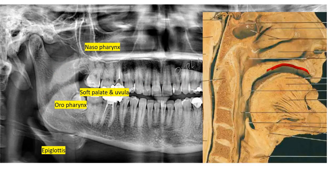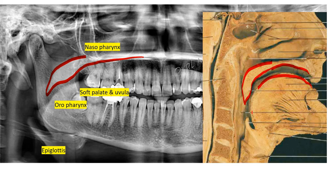This is the hard palate. This is the soft palate that extends as the uvula, so the hard palate then comes down into the soft palate. This is the uvula. Here is the dorsal surface of the tongue. The space between the soft palate and the nose is the nasopharynx, and the space between the tongue and the soft palate is the oropharynx.